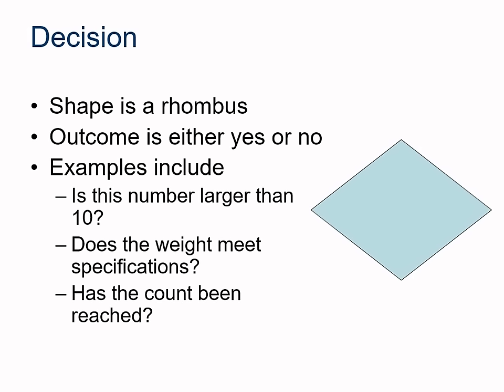So here's where our decisions go. This is where we're going to be asking yes or no questions, and our program, our flowchart, is going to go off in two different directions based on the answers to those questions. And there's some examples there.